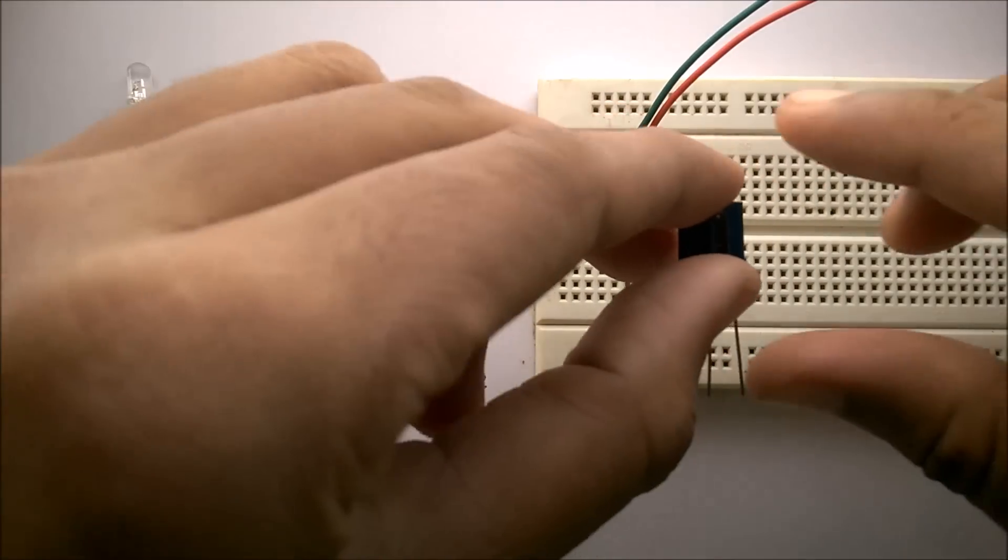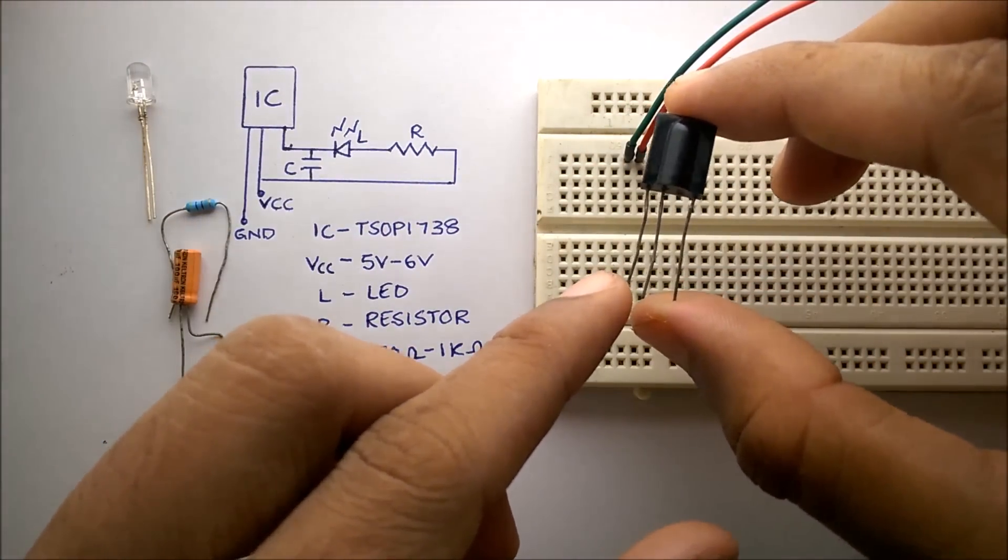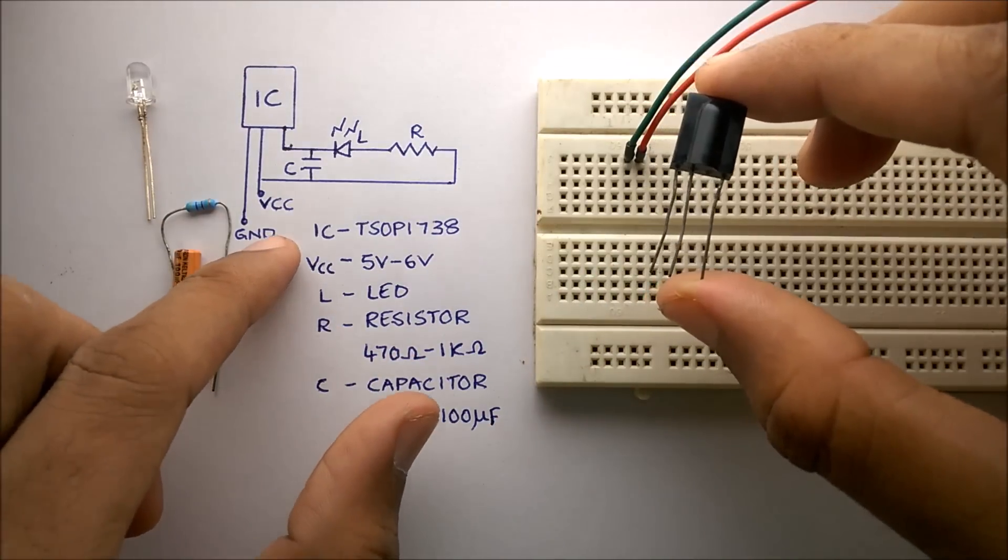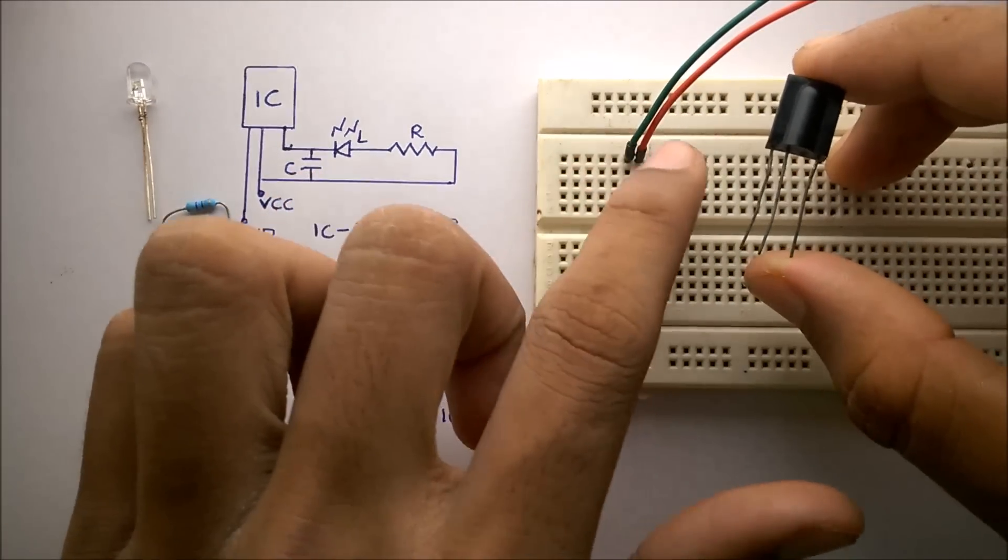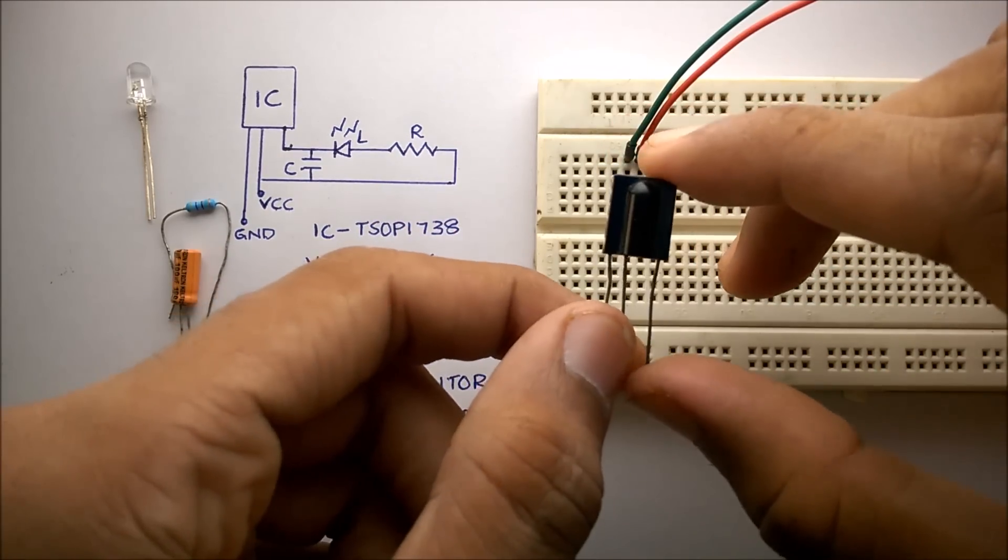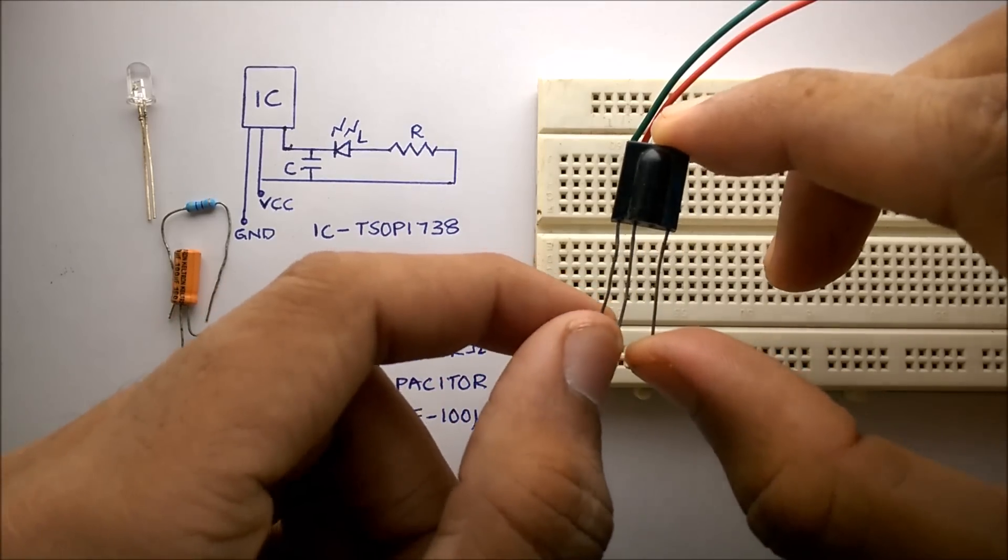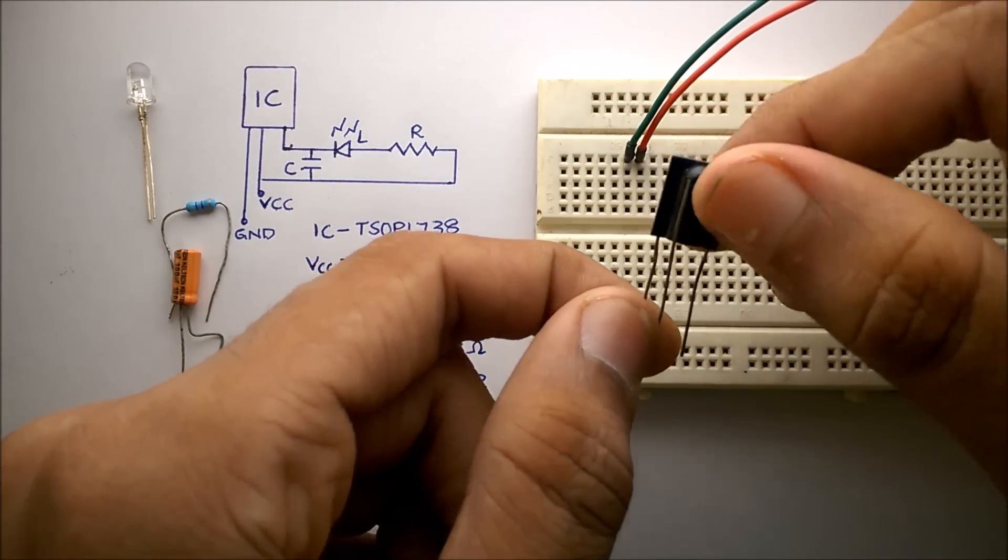So the first pin of TSOP 1738 goes to ground. Here, the green wire is ground and the red wire is VCC, which is 5 volts. For the datasheet of this IC, you can follow the description below this video.